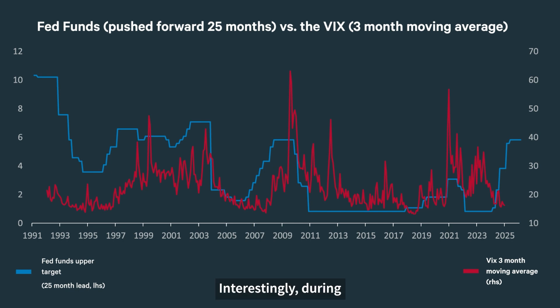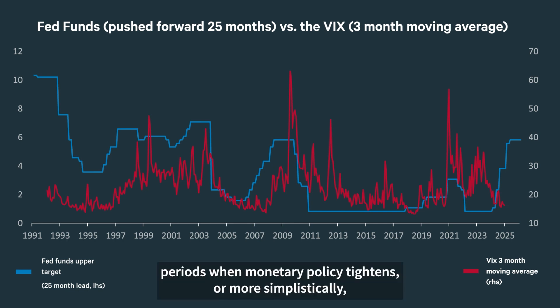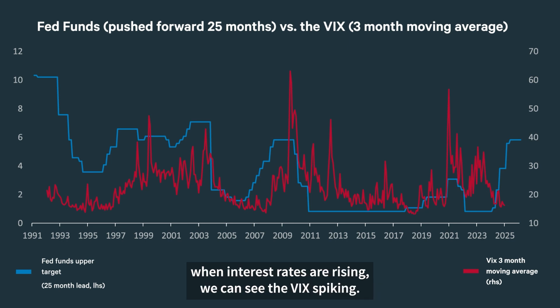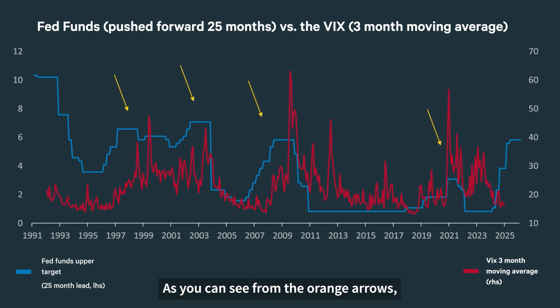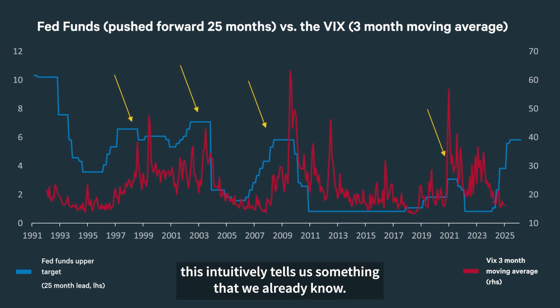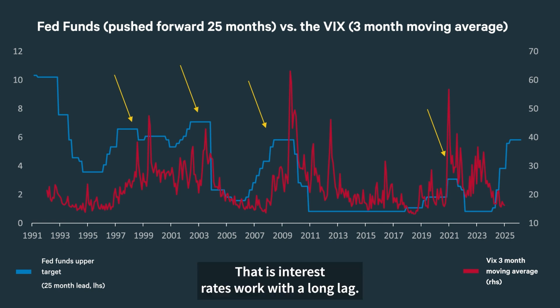Interestingly, during periods when monetary policy tightens — or more simplistically when interest rates are rising — we can see the VIX spiking, as you can see from the orange arrows. This intuitively tells us something that we already know: that interest rates work with a long lag — indeed a two-year lag to be specific.